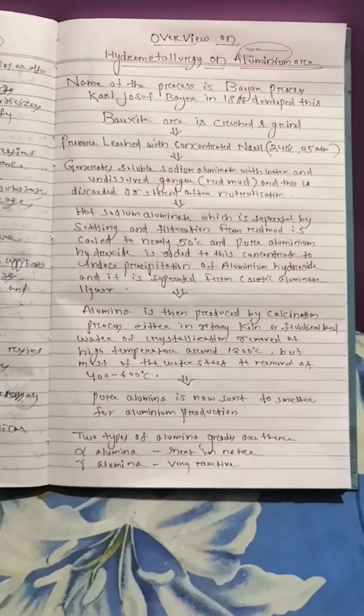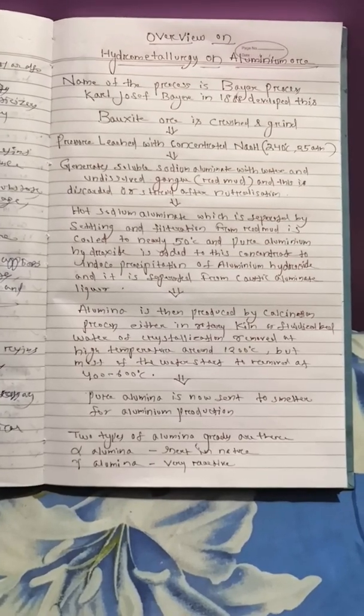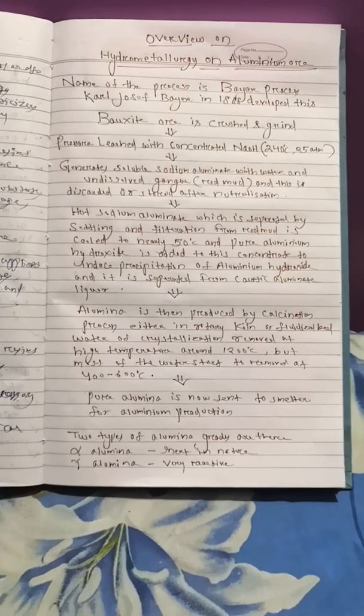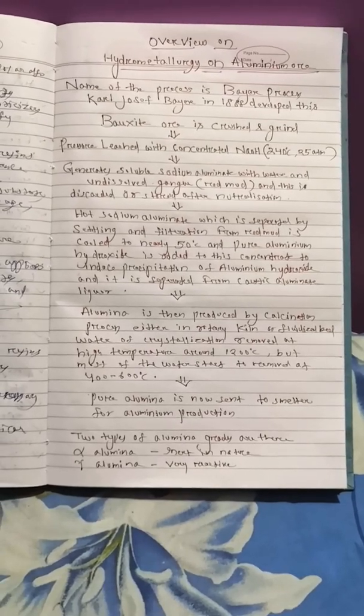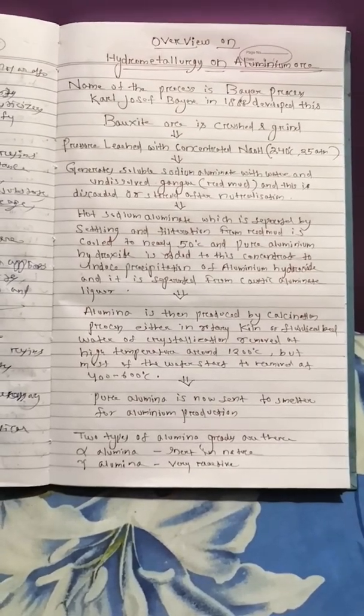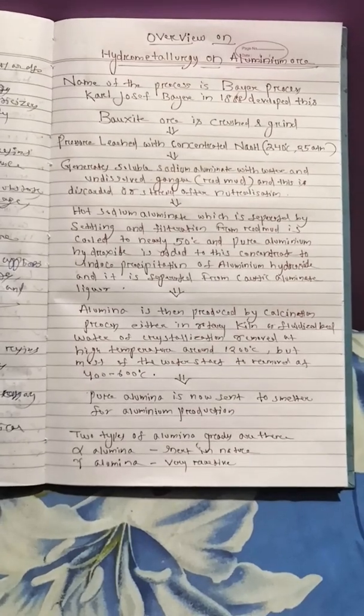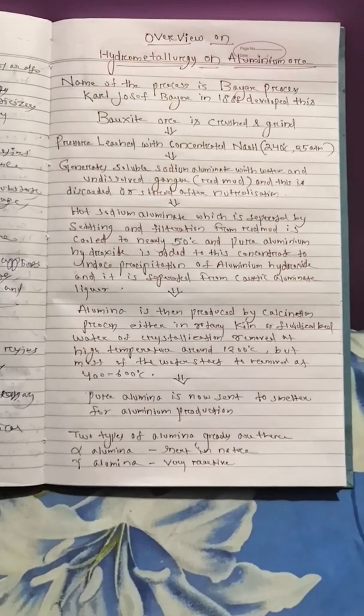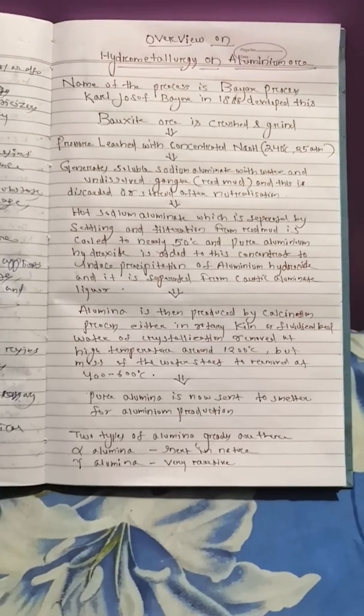Hydrometallurgy on aluminum ore is done to purify or refine the ore. The process is called Bayer's process, developed by Carl Joseph Bayer in 1888.